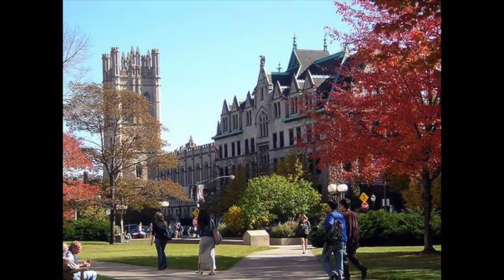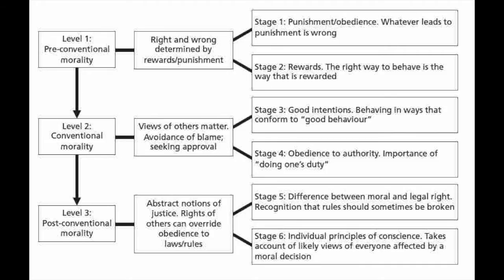Lawrence Kohlberg was an American psychologist best known for his theory on the stages of moral development. These stages are planes of moral adequacy conceived to explain the development of moral reasoning. Created while studying psychology at the University of Chicago, the theory was inspired by the work of Jean Piaget and a fascination with children's reactions to moral dilemmas. Kohlberg's theory holds that moral reasoning has six identifiable developmental stages, each more adequate at responding to moral dilemmas than its predecessor.